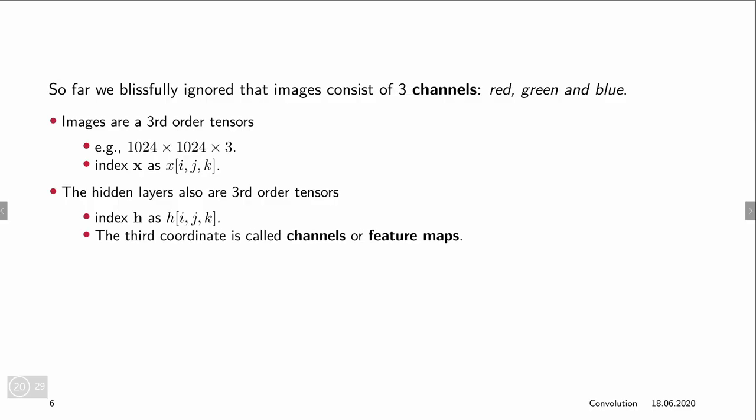So this means that an image really is a tensor that has its height, its width times three. Also, x needs to be indexed by three indices. Similarly, we actually would model our hidden layers as third order tensors, and each coordinate in these hidden layers we would call channel or feature map.